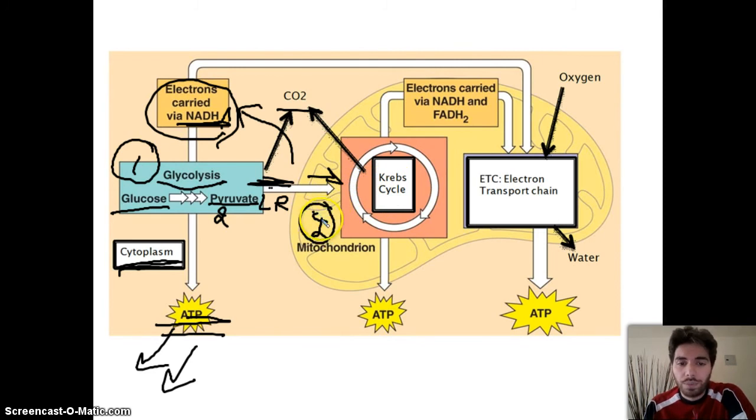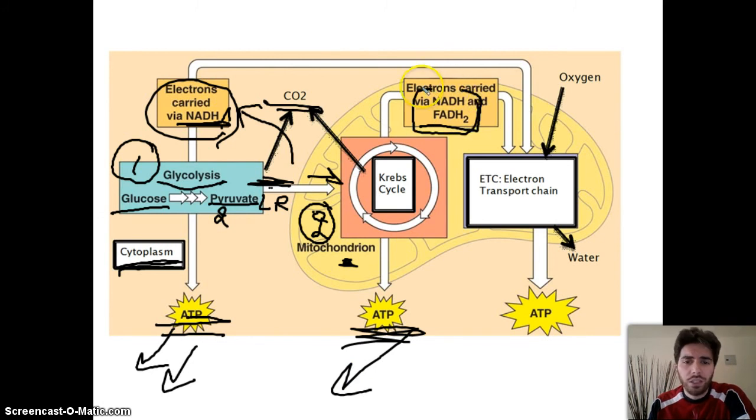The Krebs cycle, or sometimes called citric acid cycle, happens in the matrix of the mitochondria. It's a cycle, so it ends where it started, and it releases a lot of CO2. It's the breaking down, more breaking down of glucose until we release all the CO2, so all the carbons we've taken in are released there. This breaking down will give us energy in the form of ATP and other electron carriers such as NADH and FADH2. I'm not going into the numbers now.